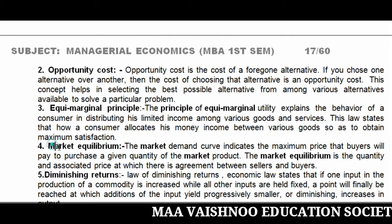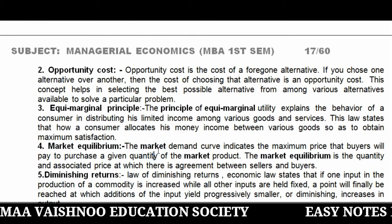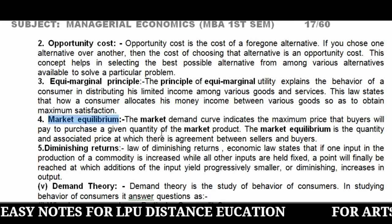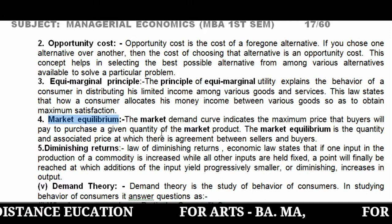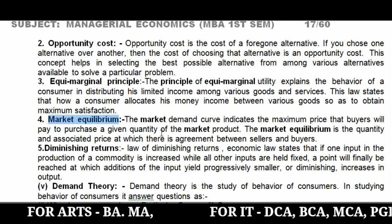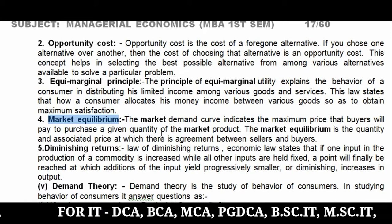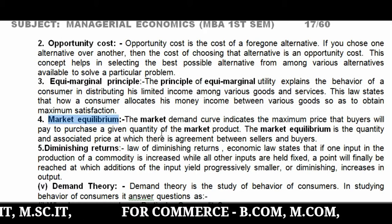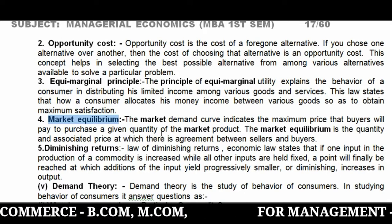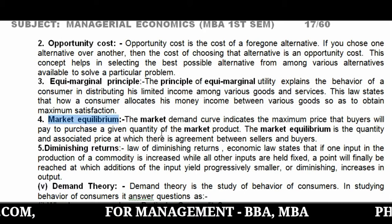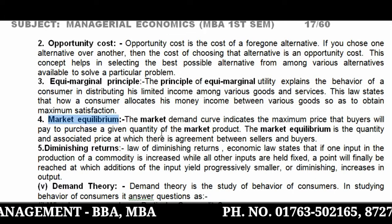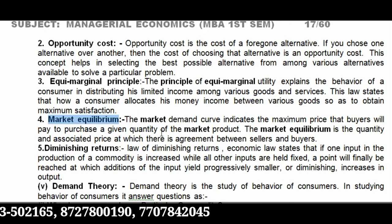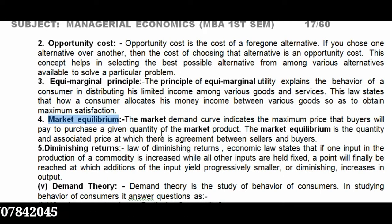The next point is Market Equilibrium. Market equilibrium shows us the demand curve — the maximum price a buyer wants to pay against the quantity being purchased. Market equilibrium is reached where the demand and supply curves intersect — it shows the agreement between the seller and buyer, where the buyer wants a specific quantity at a specific price and the seller also wants to sell that specific quantity at that same price.